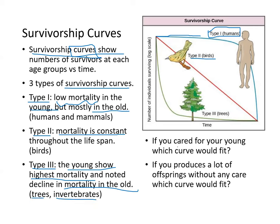If you rear your young, you fit the top curve — humans rear their young, which is why they survive so well. If you produce many offspring without any parental care, you fit the Type 3 curve, like invertebrates, where many of the young die shortly after birth and only a few survive.